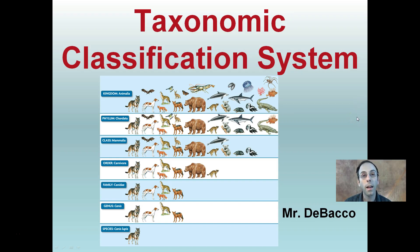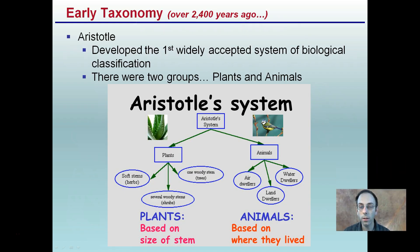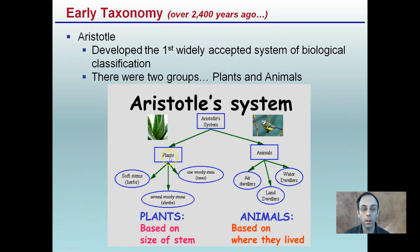We're going to be looking at the taxonomic classification system. It's a way to organize certain species to determine how they may be related and which ones are more closely related than others. Aristotle developed the first widely accepted system about 2,400 years ago. He divided organisms into two main groups: plants and animals. Plants were categorized by stem type — soft stem, woody stem, or shrub — and animals by where they lived: air, water, or land.